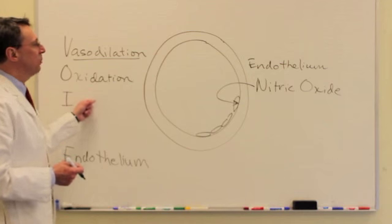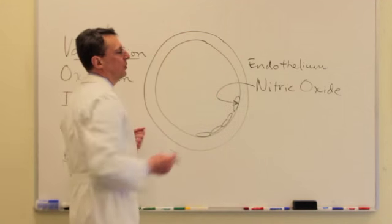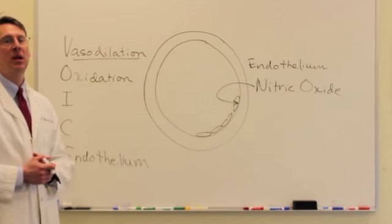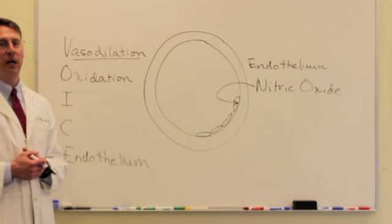And the reason why that's important is oxidation within the inside of the blood vessel can damage this internal lining. So the reduction or the balance of oxidation is an extremely important thing in terms of reducing the rate at which we age.